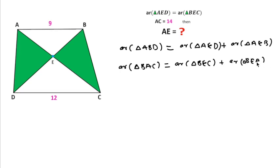According to the question, these two areas are equal, so in place of BEC we can write AED. If we substitute triangle AED here, then these two areas are equal: area of triangle ABD equals area of triangle BAC.